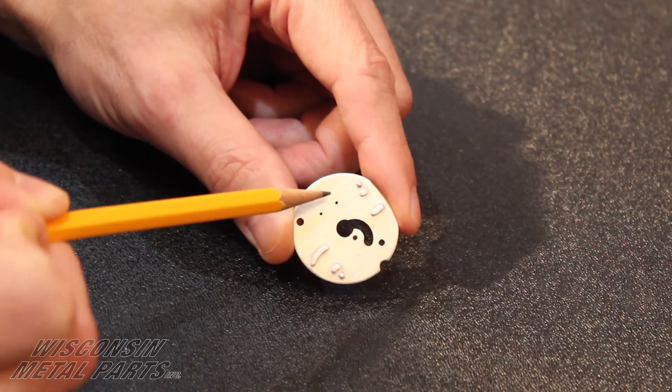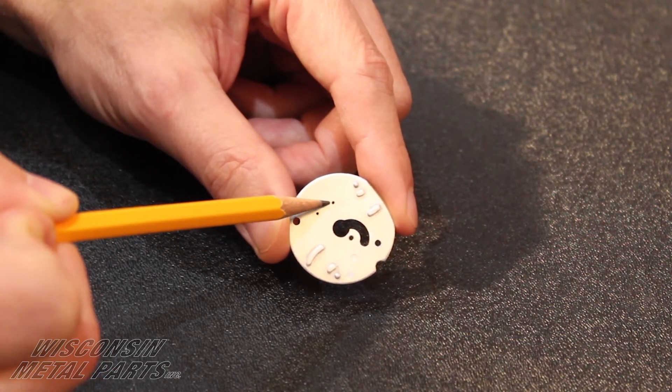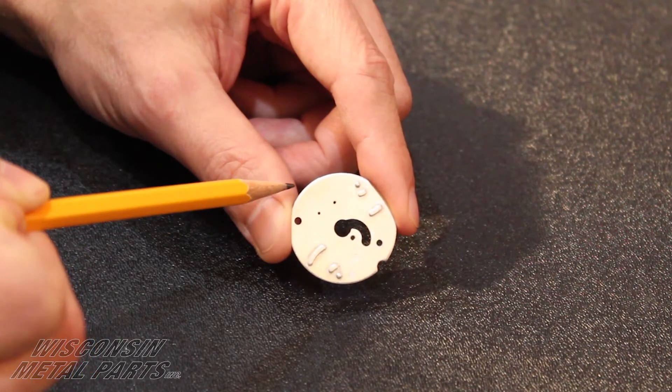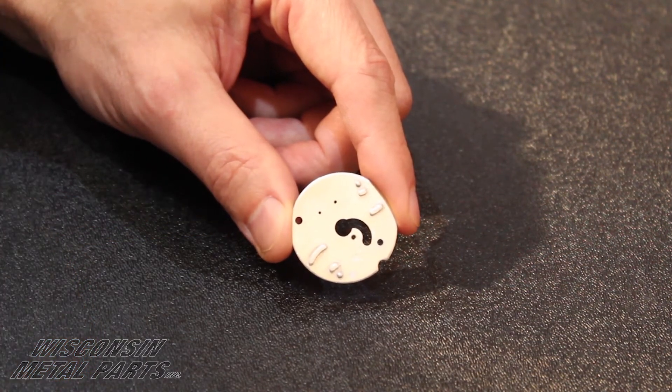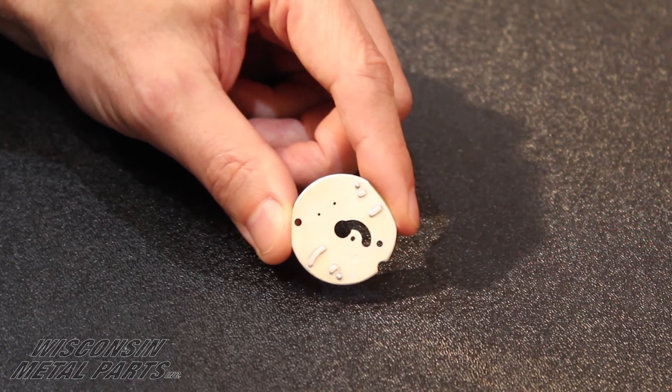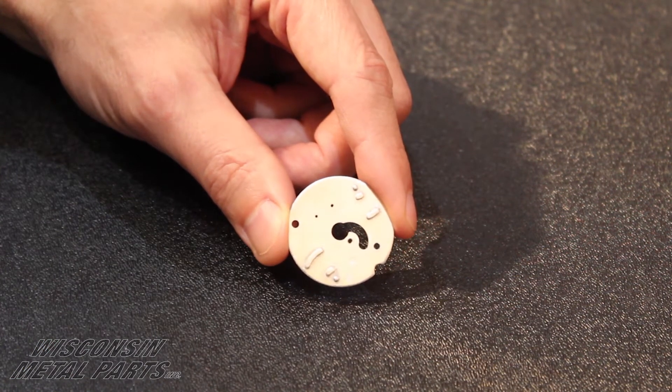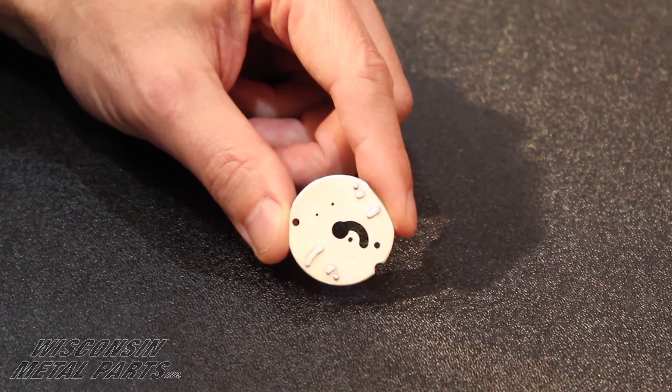Another unique feature is that we have hole diameters that we are piercing that are about half the size of the material thickness. Normally you don't want to go below one to one on hole diameter ratio to thickness.